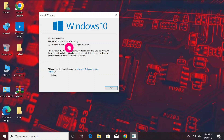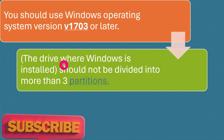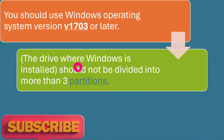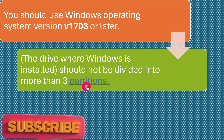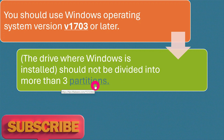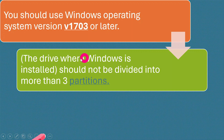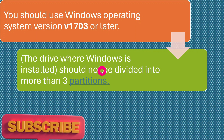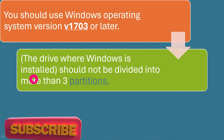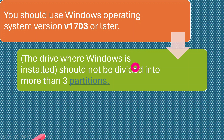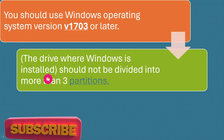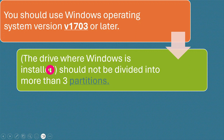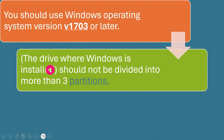Requirement number two is that the drive where Windows is installed should not be divided into more than three partitions. In order to check your partitions, you should do the following: click on the Windows search button and type 'create and format'.